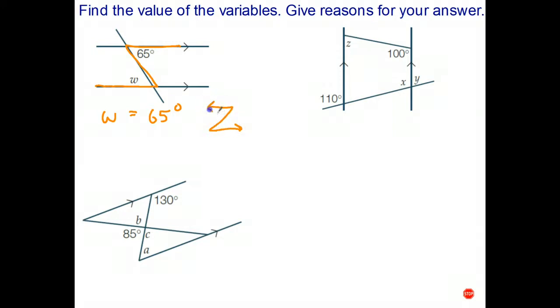Looking at this one over here, once again we have to make sure we use the parallel lines, not the ones that are not parallel when we're doing our calculations. There's the C rule, so Z plus 100 equals 180. So Z is 80 degrees, and the reason is co-interior angles add to 180.